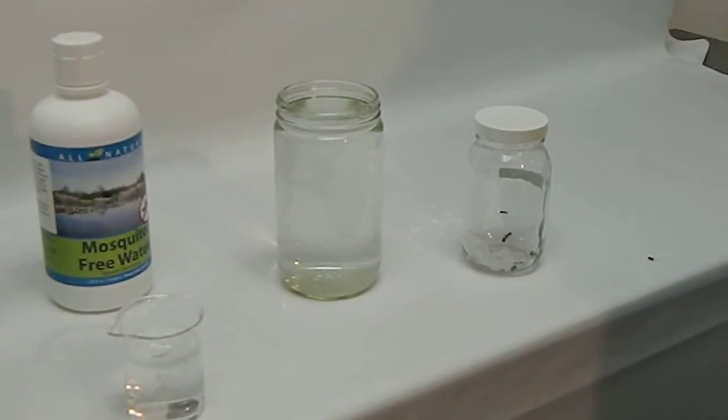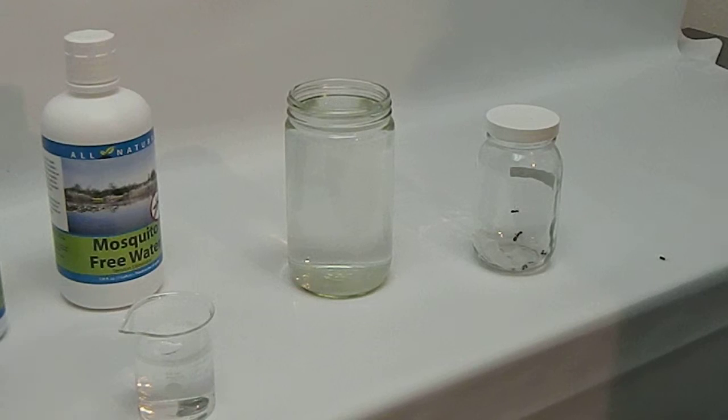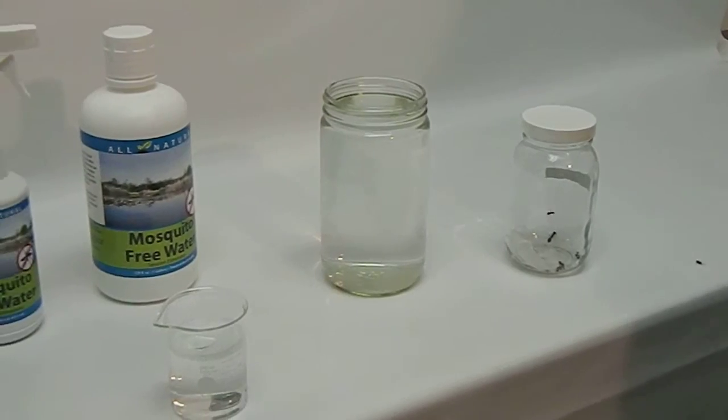And in the case of the adult, well again, it never gets that far because we've stopped the mosquito from actually landing on a body of water. So when you see tires in your backyard, birdbaths, fountains, ponds, any type of stagnant water, this is the product to use.